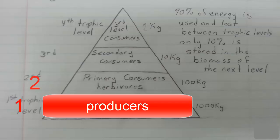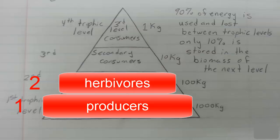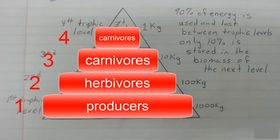The second trophic level is occupied by primary consumers, or herbivores. These organisms only consume producers and are always found at trophic level 2. The third trophic level and fourth trophic level are occupied by secondary and tertiary consumers.